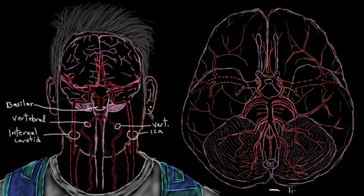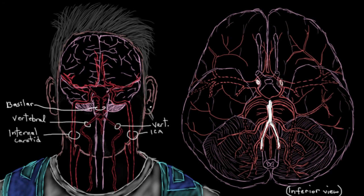Let's find those same arteries on the inferior view. Here's your right vertebral artery, your left vertebral artery, and your basilar artery — three of our five major arteries. The internal carotids are a bit tricky to find here; they actually end right about where I've snipped them. This is right about where the internal carotid arteries end, and we'll find out what they turn into in a few minutes.